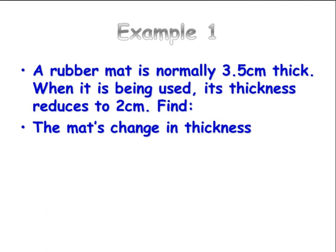Okay, let's just quickly walk you through a basic example. So we've got a rubber mat that's normally 3.5 centimeters thick and when it's used reduces to 2 centimeters thick. So find the change in thickness, well delta L is the difference between the used and the original, 1.5 centimeters.